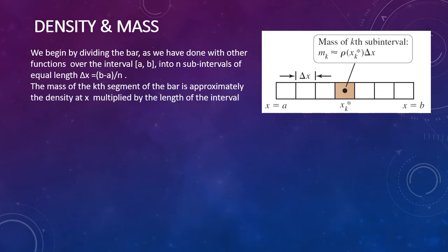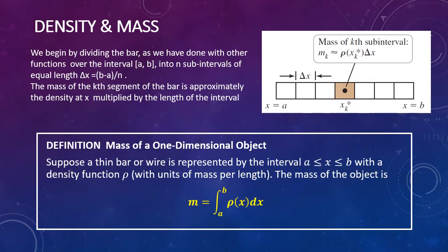We begin by dividing the bar over the interval a, b into n subintervals of equal length, where delta x equals b minus a over n. The mass of the k-th segment of the bar is approximately the density at x multiplied by the length of the interval. This gives us the definition of the mass of a one-dimensional object: suppose a thin bar or wire is represented by the interval a ≤ x ≤ b with density function rho in units of mass per length. The mass equals the integral from a to b of rho of x dx.